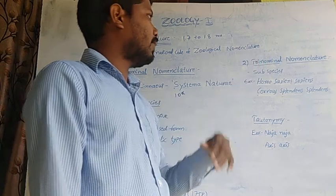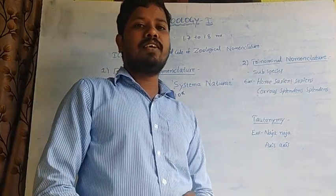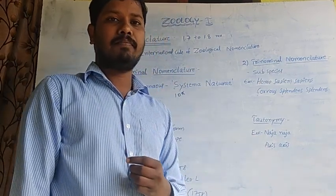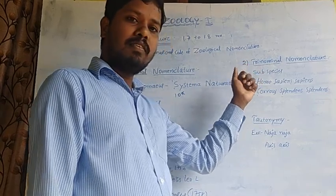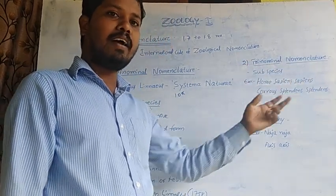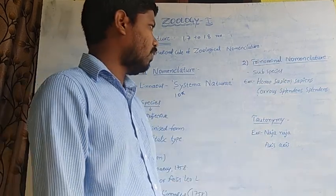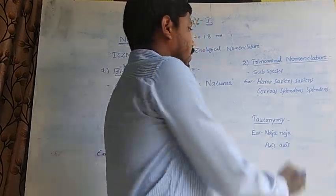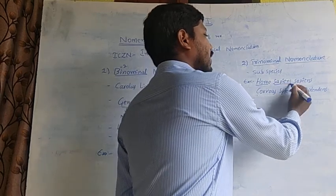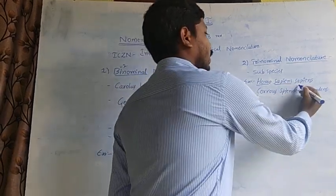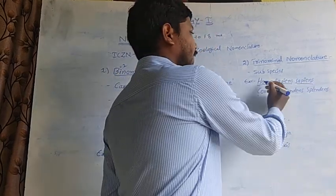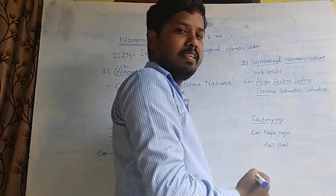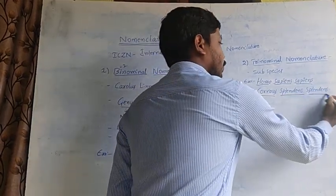The second method is trinomial nomenclature, which is an extension of binomial nomenclature. This nomenclature consists of a three-worded name — genus, species, and subspecies. For example, Homo sapiens sapiens — homo is genus, sapiens is species, and sapiens is subspecies. Similarly, Corvus splendens splendens — corvus is the generic name, splendens is the specific name, and splendens is the subspecific name.